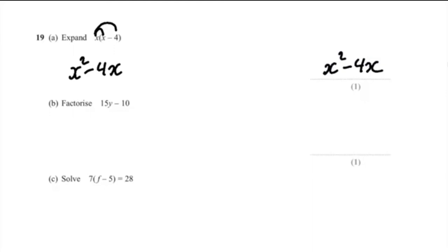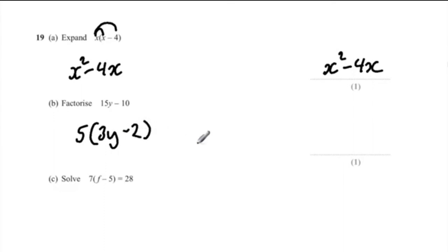Question 19B: factorise 15y − 10. The highest common factor of 15 and 10 is 5, so 5 goes outside the bracket. 5 times 3y gives 15y, and 5 times negative 2 gives negative 10. Final answer: 5(3y − 2).